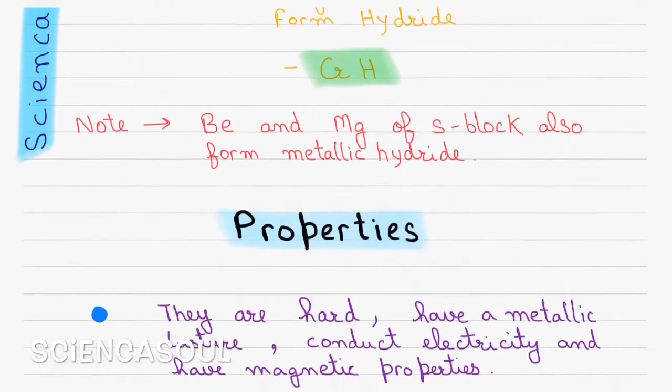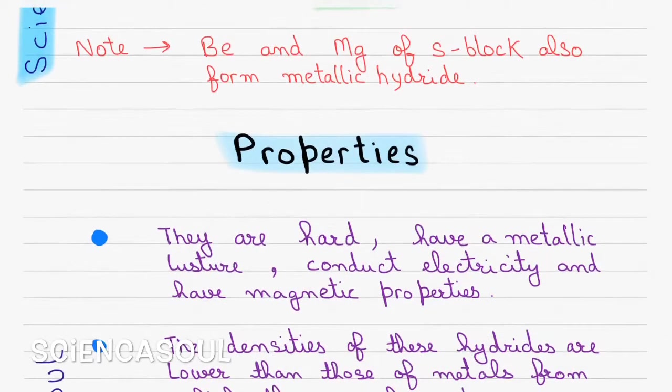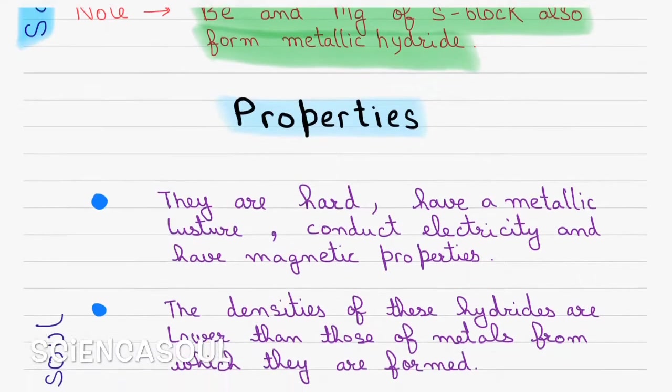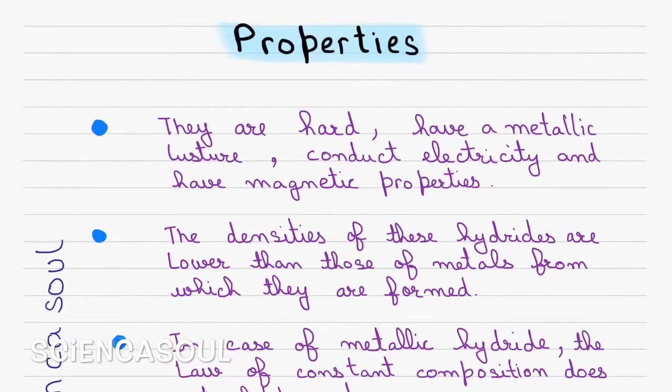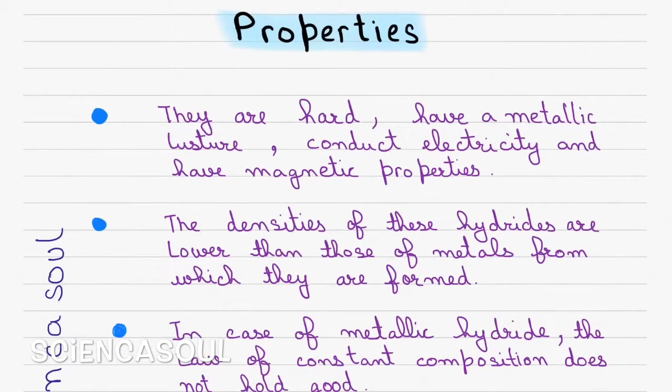Remember this. And now note, beryllium and magnesium, which are s-block elements, also form metallic hydride. This is important because this is an exception, and exception is always important. Now properties: they are hard.